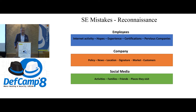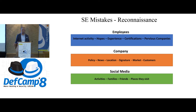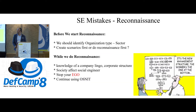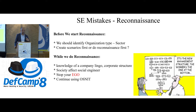For example, employees post on social media that the company is celebrating an event tomorrow. That's key information I can use — I send a phishing link to register for that event, and you simply click because you leaked that information. When you fail in social engineering due to these mistakes, you report wrong results to the client, saying they are secure and have good awareness. That's wrong — you failed because of your mistakes.